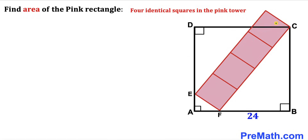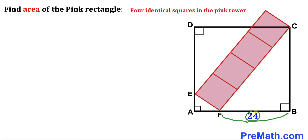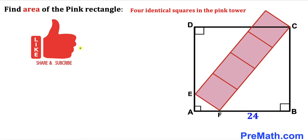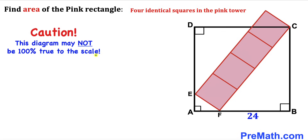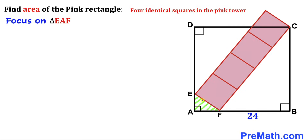Welcome to pre-math. In this video we have a pink rectangular tower leaning against square ABCD, as shown in the diagram. The pink rectangular tower consists of four identical squares, and the length FB is 24 units. Our task is to calculate the area of this pink rectangular tower. Let's go ahead and get started.